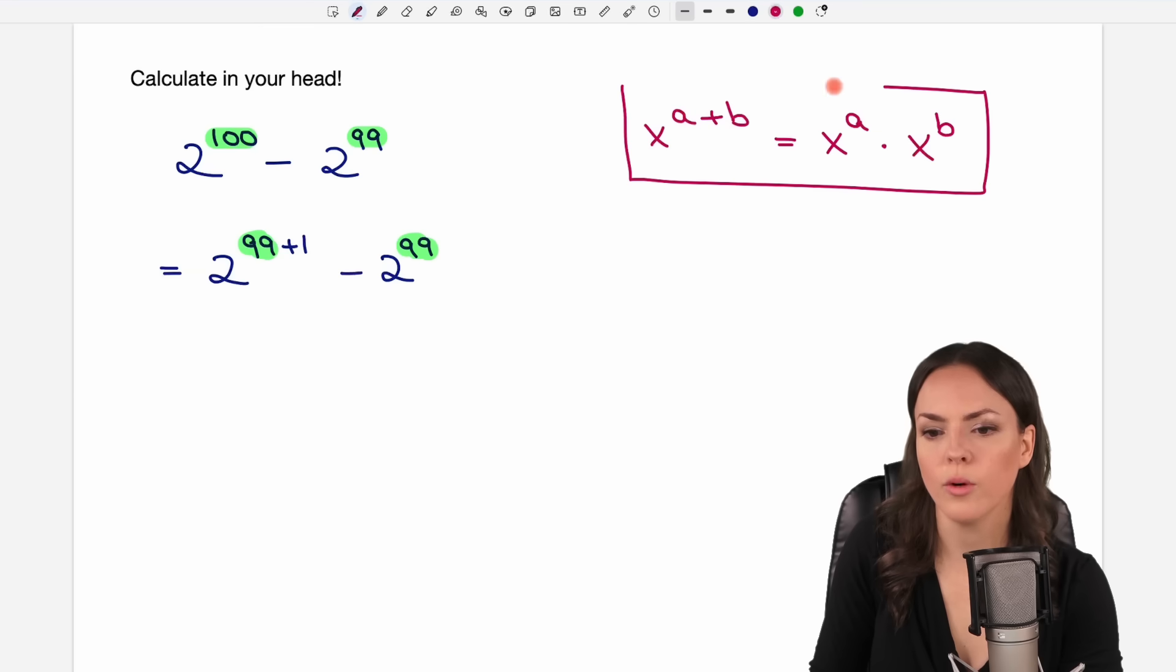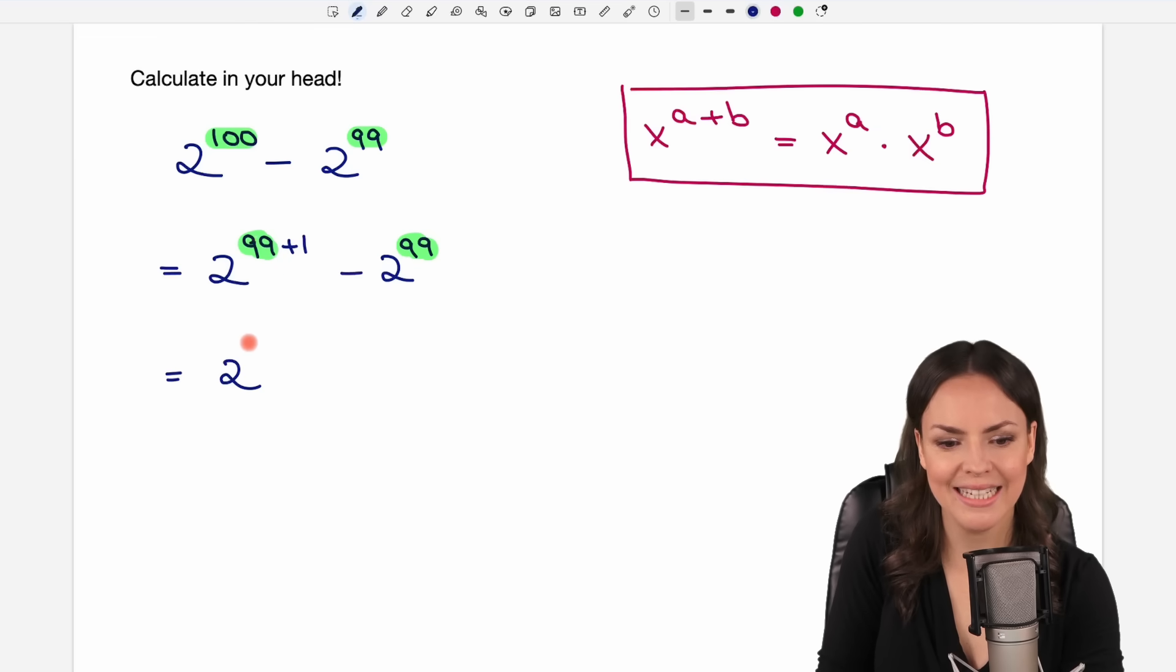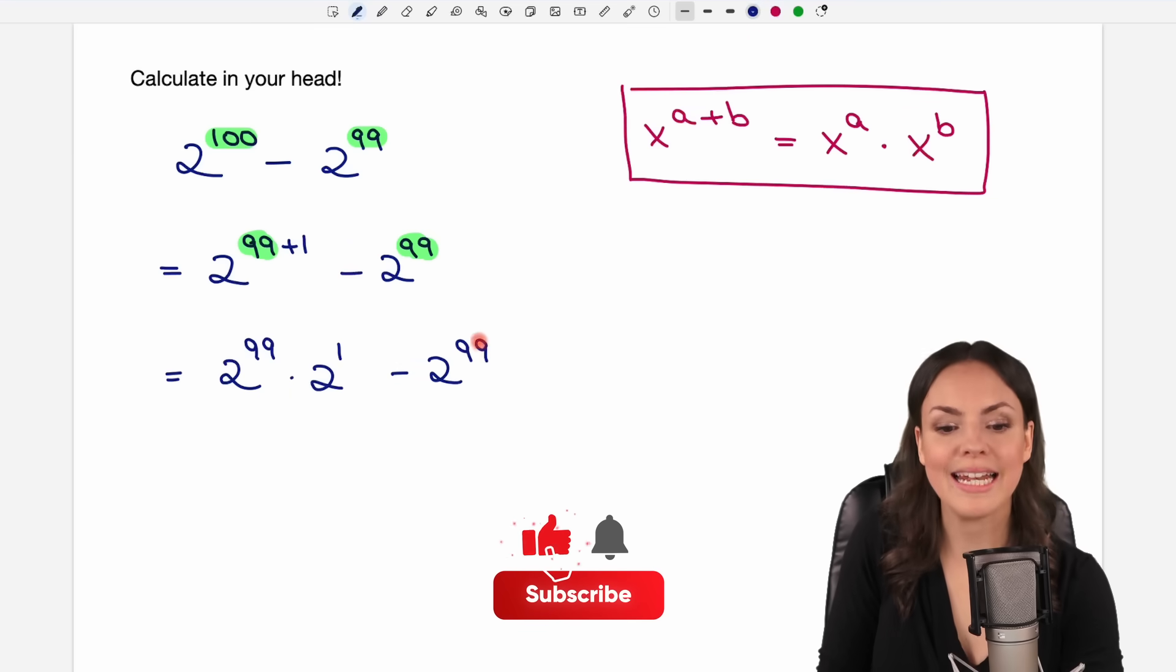This is the rule we want to apply here now. We take the base, so 2, and raise it to the first part of the sum, so to the 99, and then we multiply it by our base and raise this to the second part of the sum, so we raise it to the power of 1.